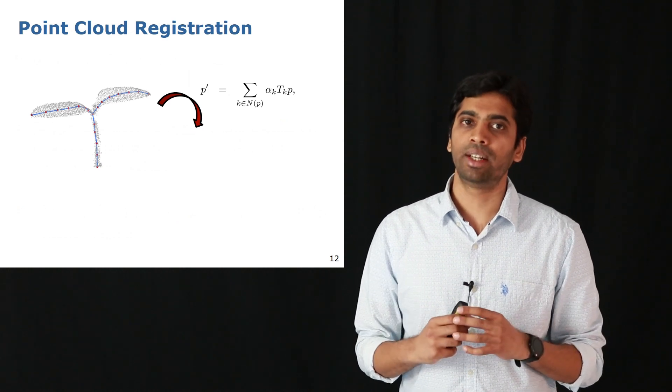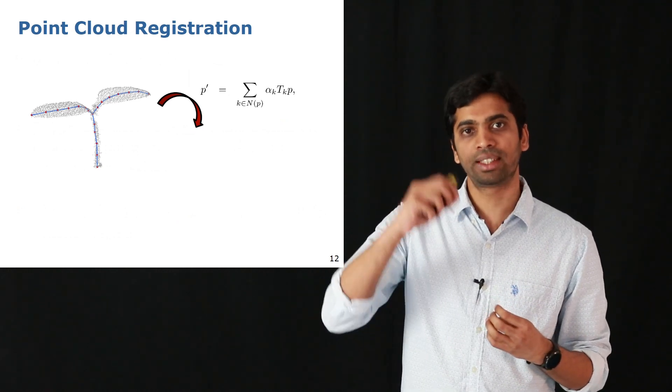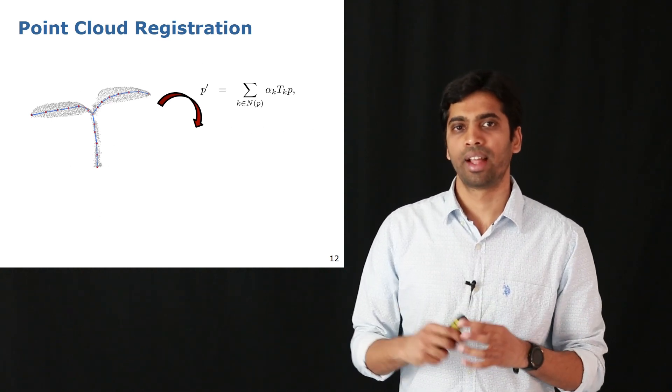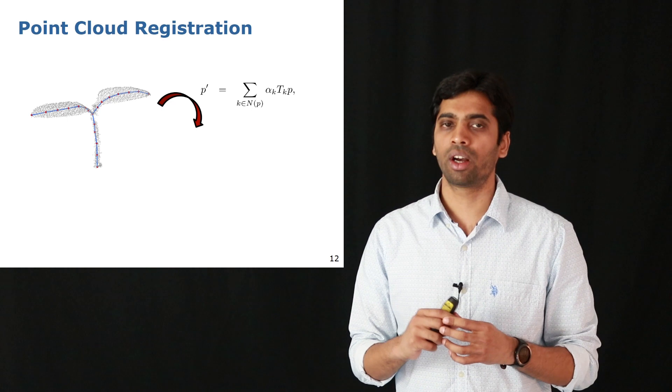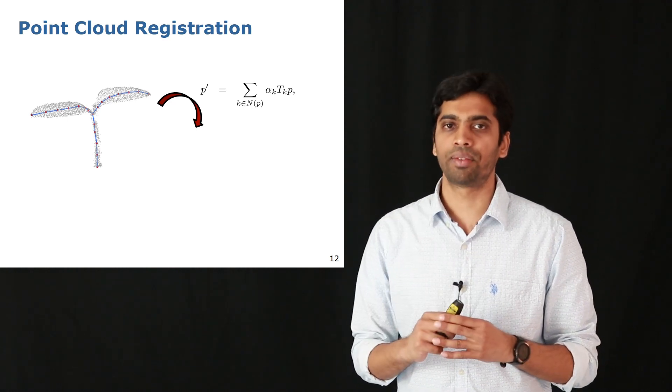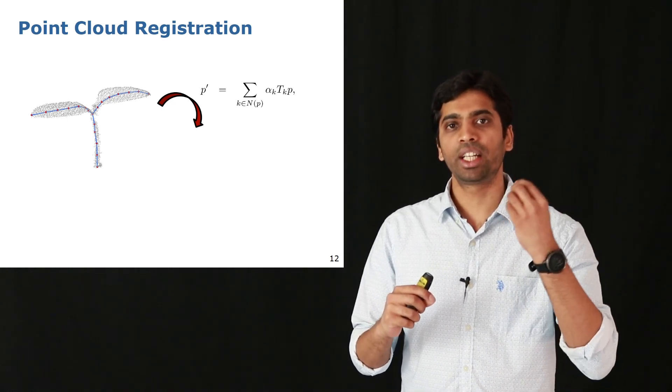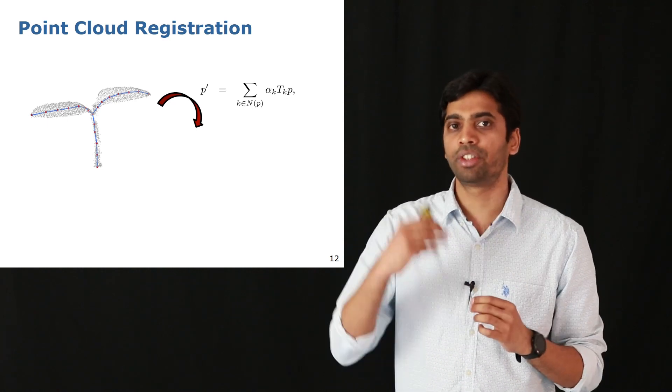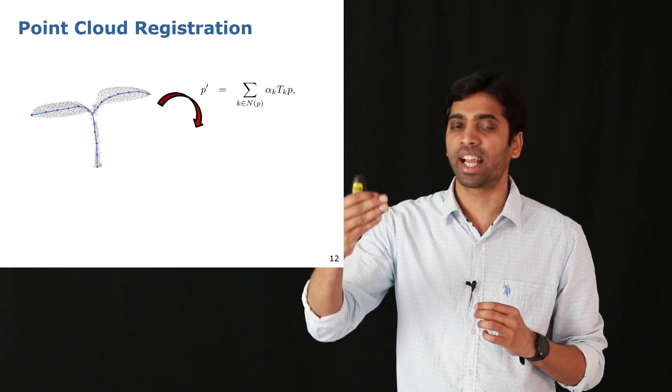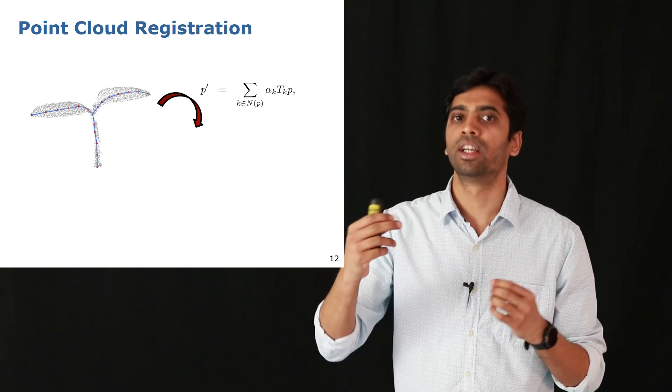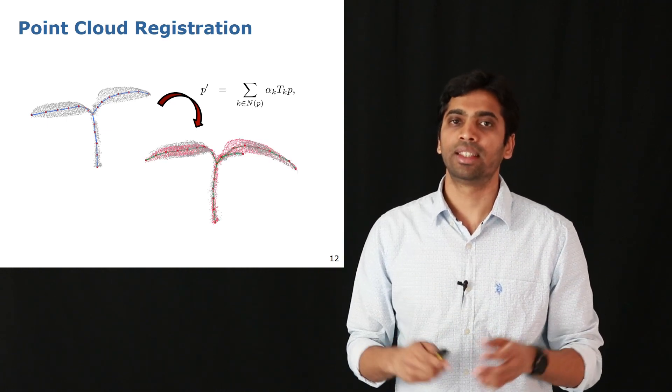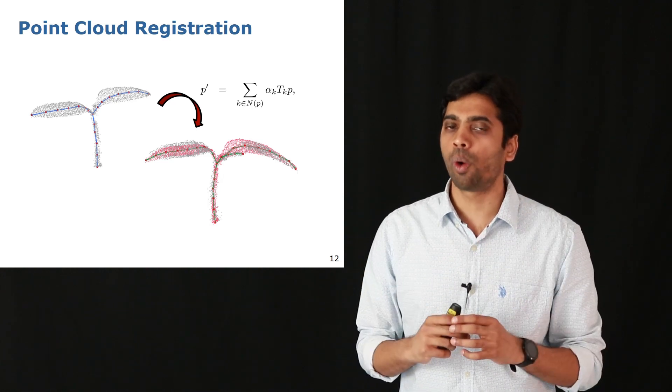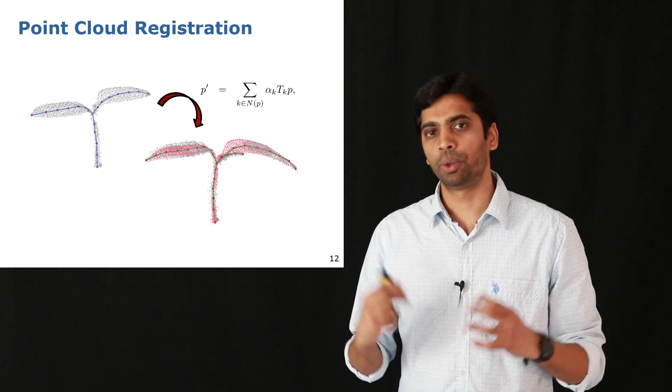Now that we have estimated the deformation parameters for the skeleton nodes, we transfer it to the entire point cloud. The way we do this is to pick a point in the source point cloud and project it onto the skeleton. Then this point is projected onto the target point cloud as a linear combination of the affine transformations attached to the k nearest nodes on the skeleton. This results in the pink point cloud shown overlaid on the target point cloud P2.